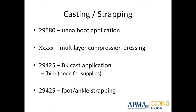Casting and strapping: 29580 is an Unna boot. 29581 — write that code in for the X's on your notes — is multi-layer compression dressing. Whether that's a kit from a company with multiple layers, or you do your own — you put something on the skin, then another layer of compression, then another — that's a multi-layer compression dressing. So if you traditionally do an Unna boot and put web roll on top and Coban on top of that, that's a multi-layer compression dressing. If you just put the Unna boot on and send them out, that's just an Unna boot. You need to describe exactly what you're using for each layer and that you're putting it on to give compression to the wound.